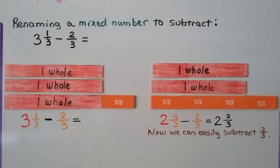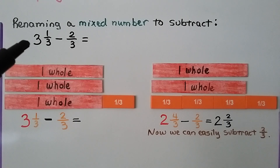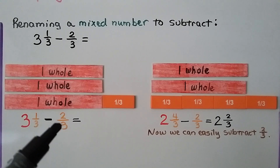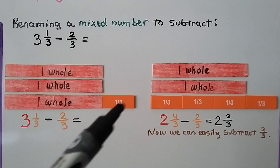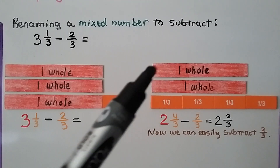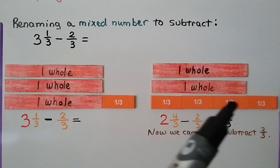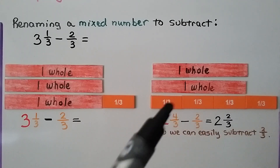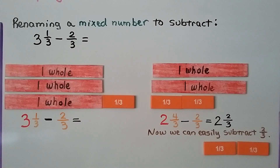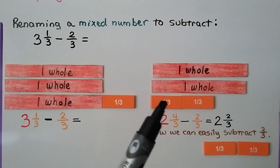We can model with fraction strips what's happening when we subtract. Renaming a mixed number to subtract: we have 3 and 1 third minus 2 thirds. We have 3 whole and 1 third, and we need to take away 2 thirds, but we only have a little 1 third part. If we rename 3 and 1 third as 2 whole with 4 thirds — here are our 3 thirds — we can take away 2 thirds easily.